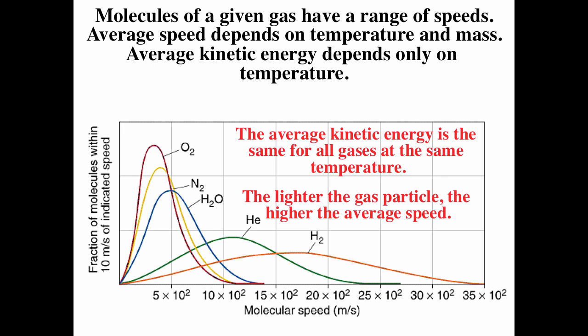We can look at a wider range. These all correspond to the same temperature, so they all have the same average kinetic energy, even though their speeds are very different. As you go from heavier to lighter, you go to a higher average speed, and also the distribution gets broader. But at the same temperature, they all have exactly the same average kinetic energy.